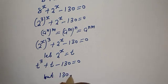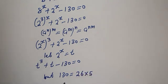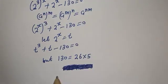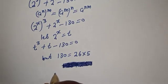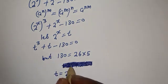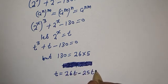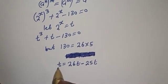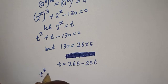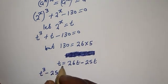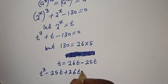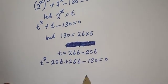130 is equal to 26 multiplied by 5. The largest factor here is 26. If we write t as 26t minus 25t and substitute, we get: t raised to power t minus 25t plus 26t minus 130 is equal to zero.